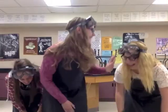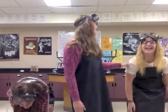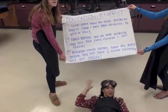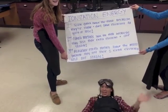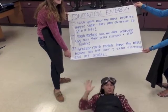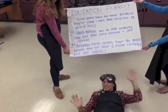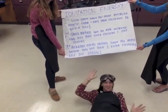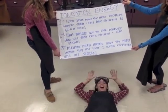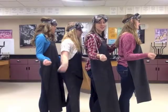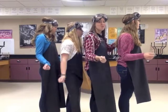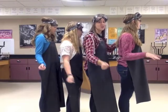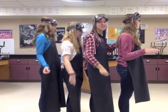A positive ion is called a cation. The loss of an electron leads to a decrease in atomic radius. A negative ion is called an anion. Addition of an electron leads to an increase in atomic radius. The metals at the left tend to form cations; non-metals in the upper right tend to form anions.